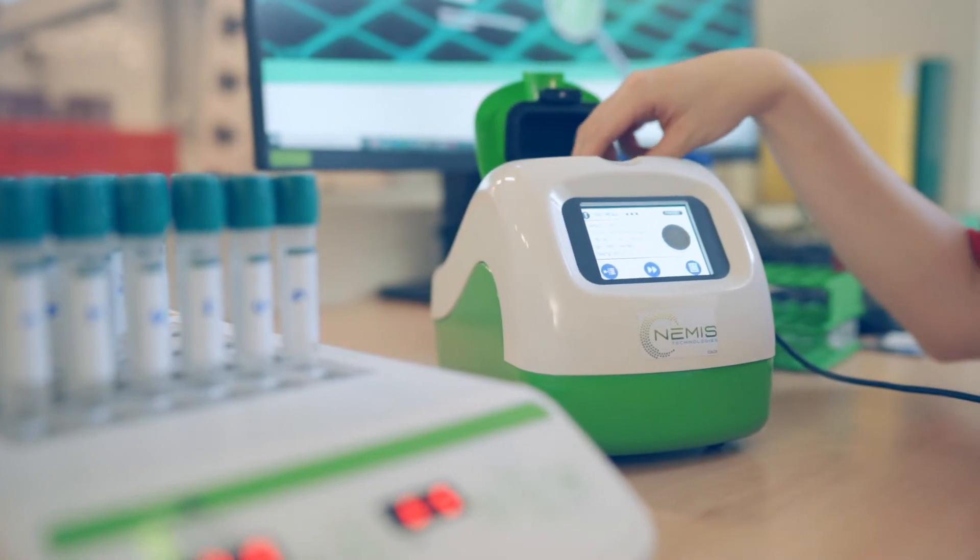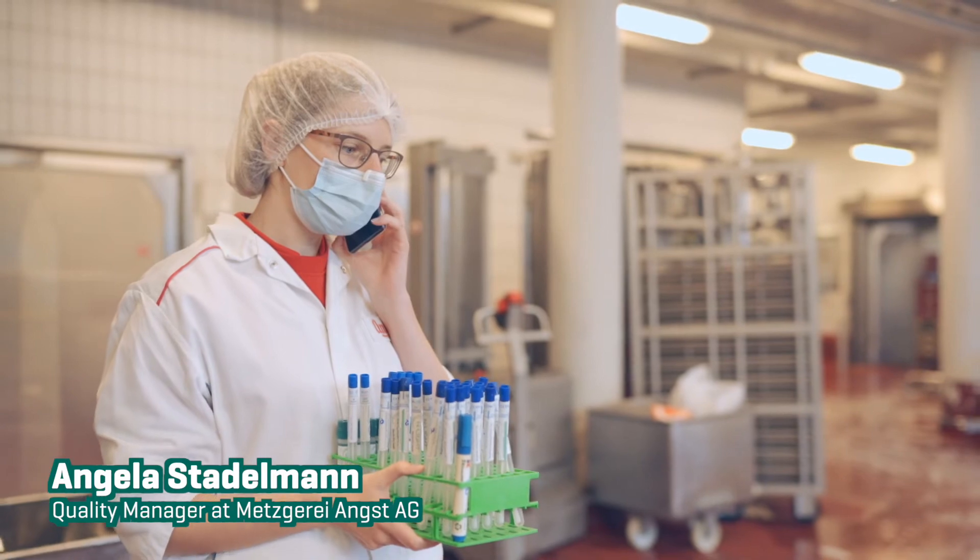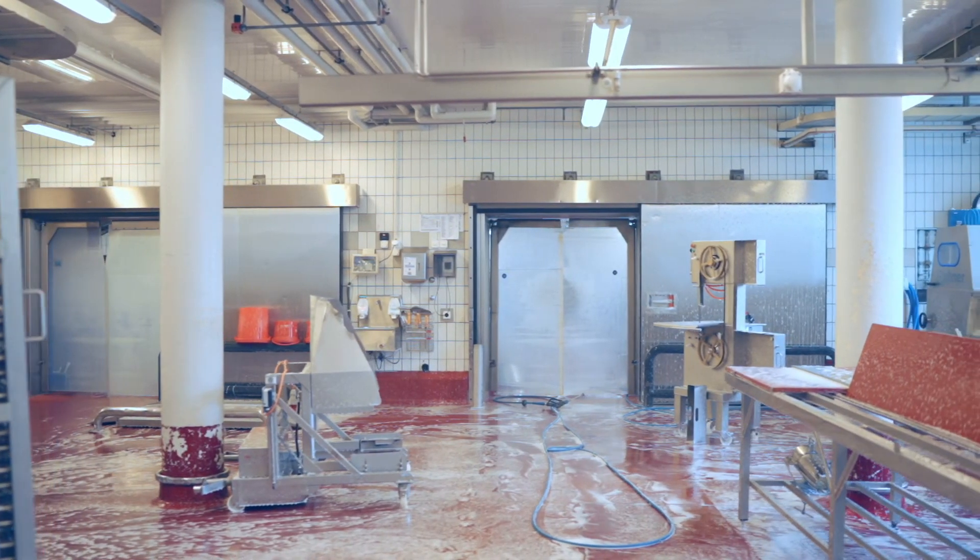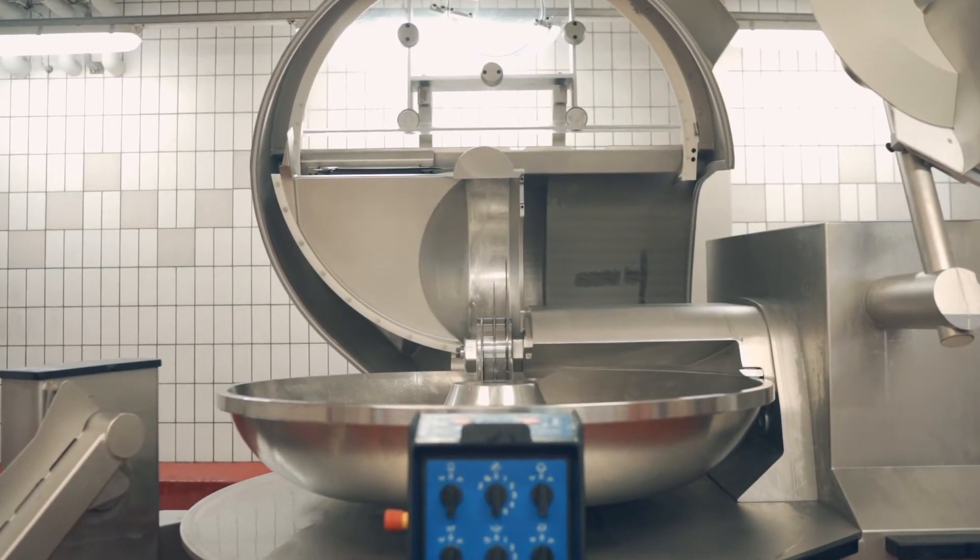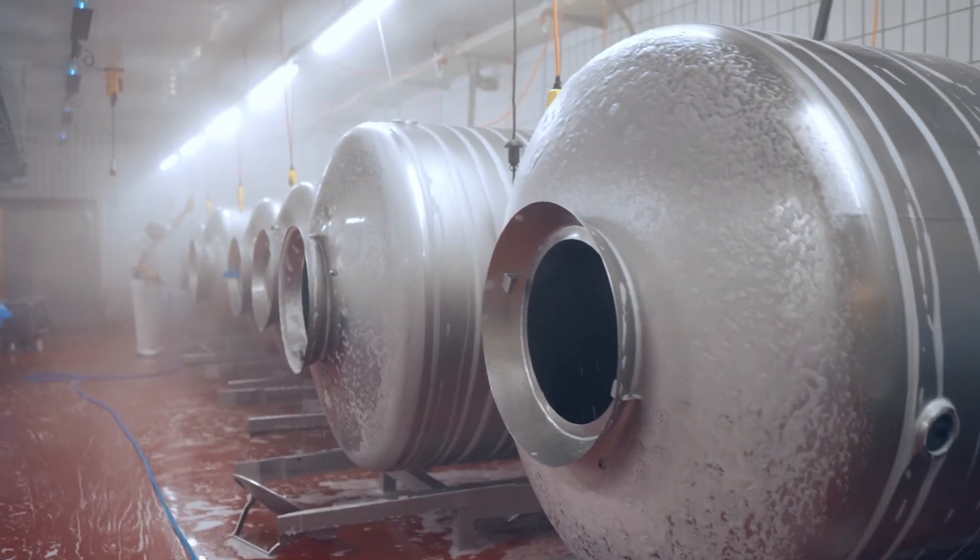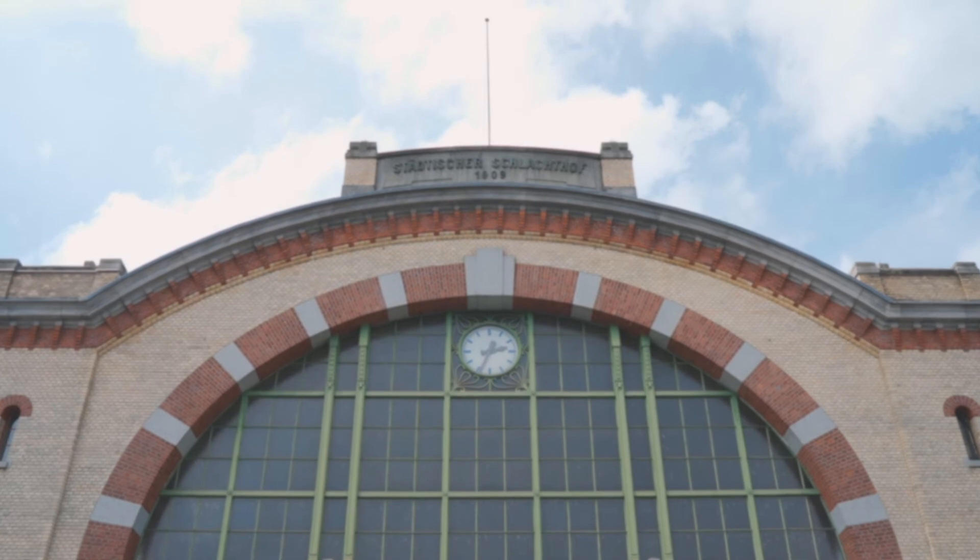Be aware of different regulatory requirements depending on your region. With the Enlite Listeria monocytogenes rapid test, we have found a method that allows us to perform efficient Listeria monitoring in our production facility. The application is user-friendly and provides reliable results in a short time. This helps us enormously to ensure food safety for our products.